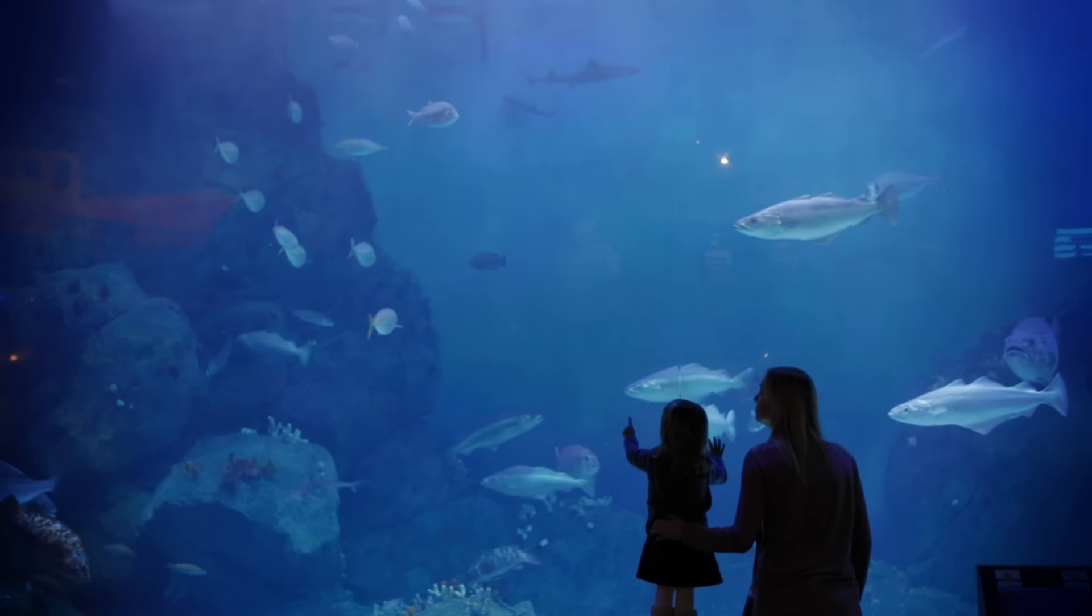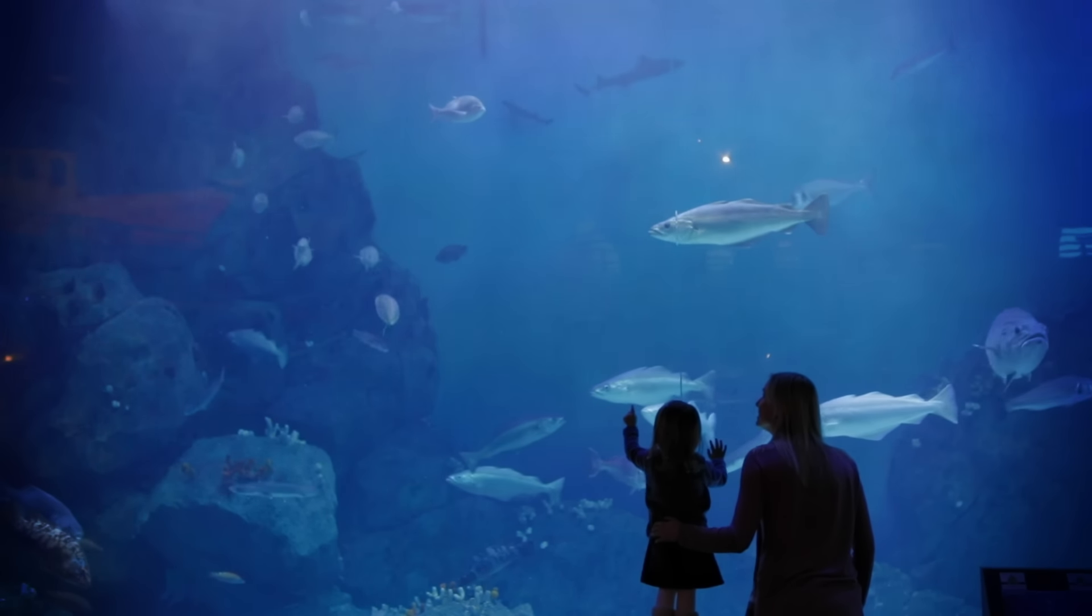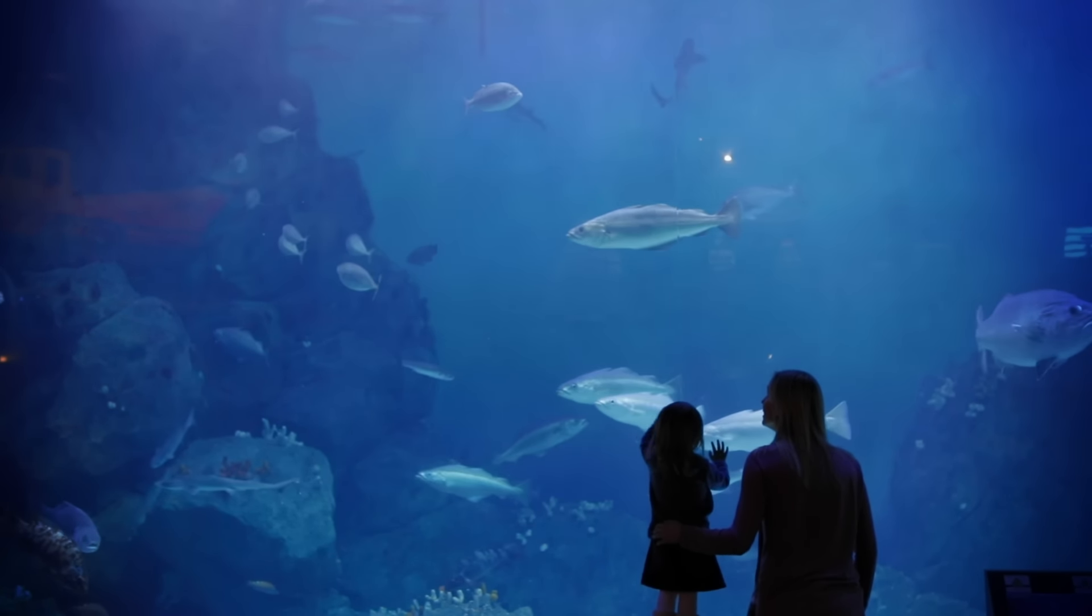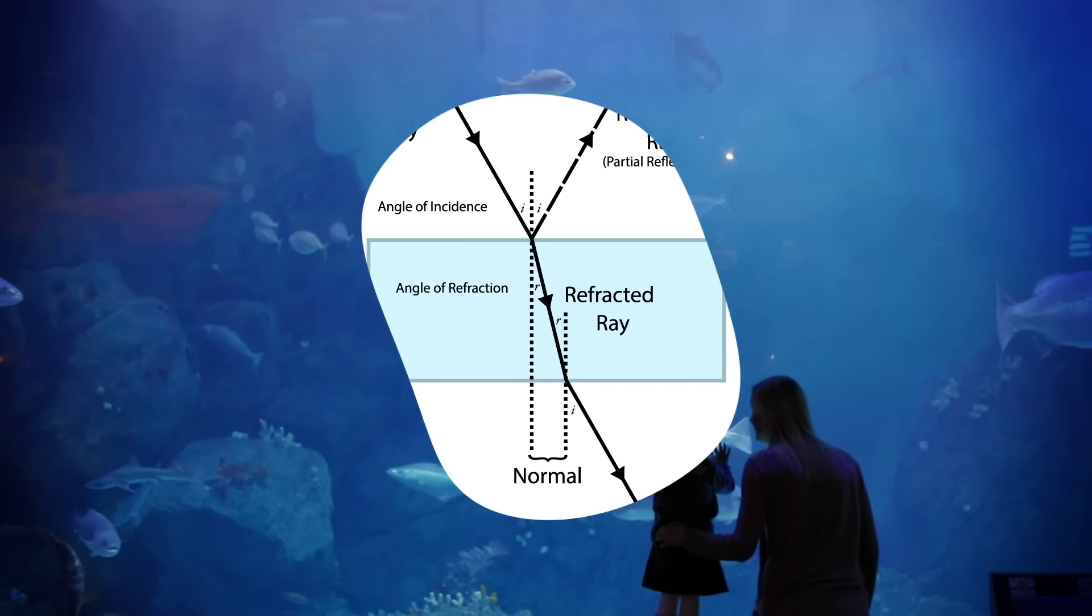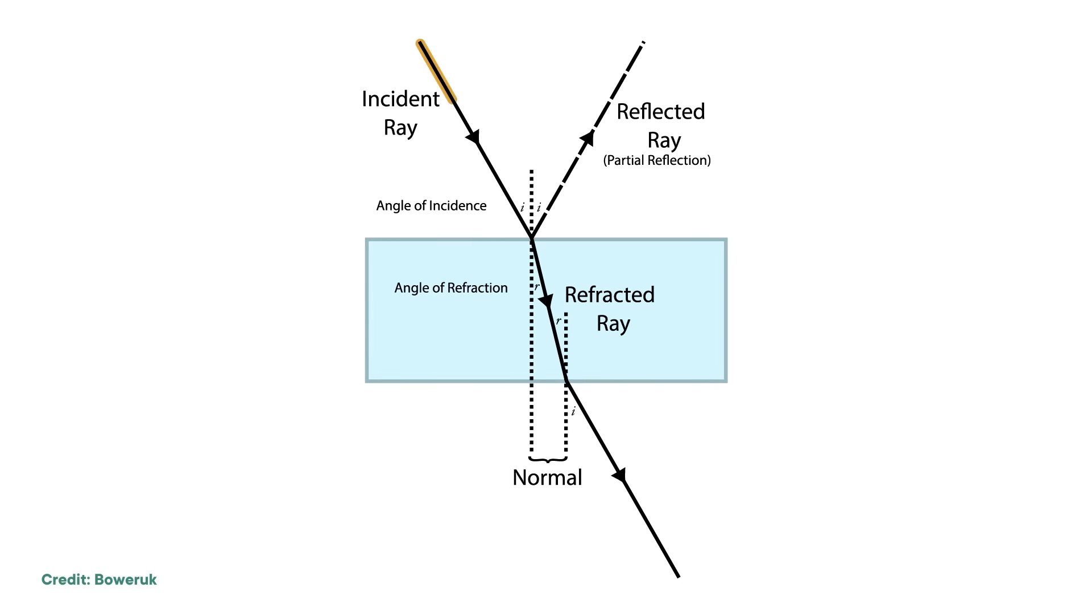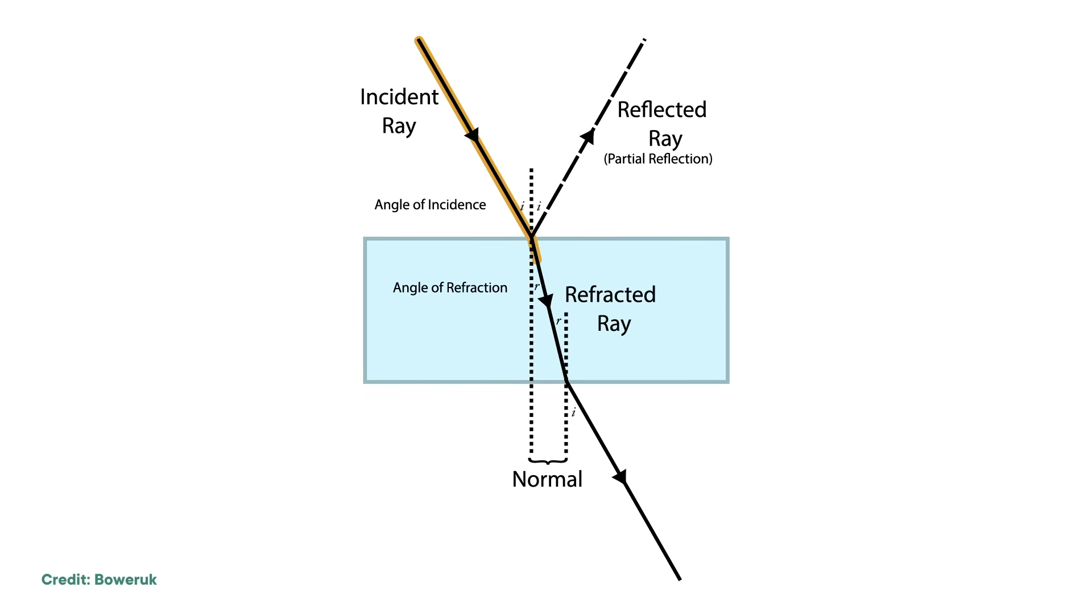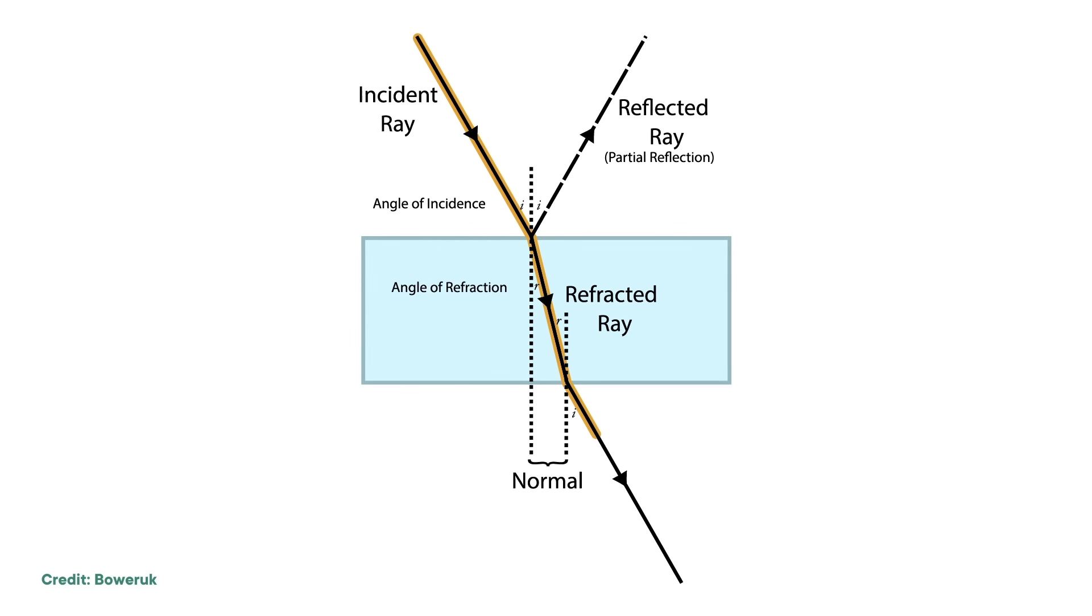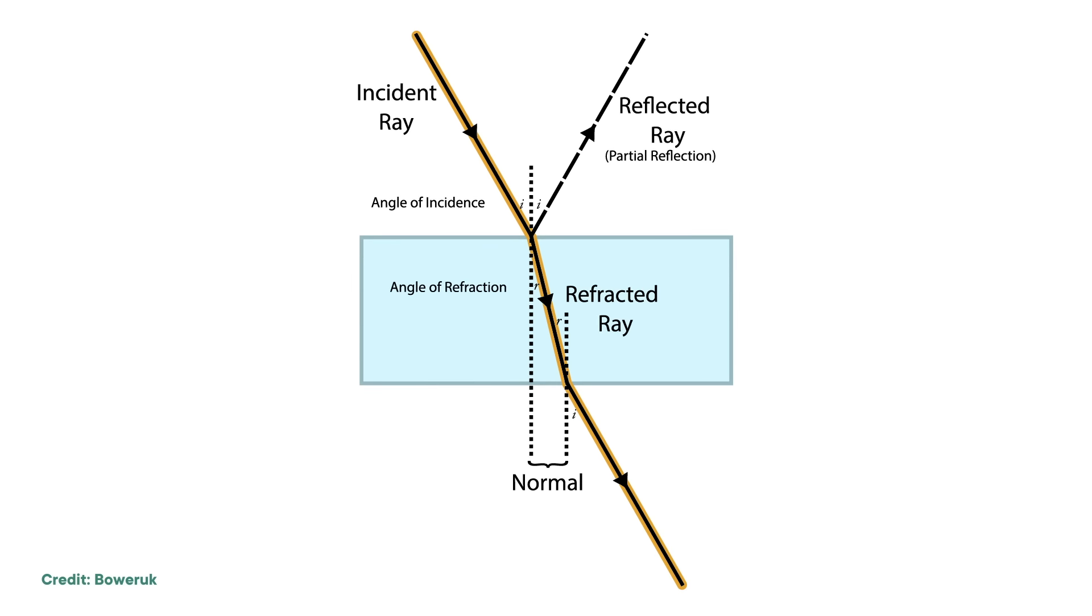But looking through, say, the side of an aquarium won't help you see something any clearer, or bigger, or smaller. And that's why lenses curve. When light enters a flat plane of glass, it's going to bend a fixed amount. And when it exits the pane, it'll bend a fixed amount again.